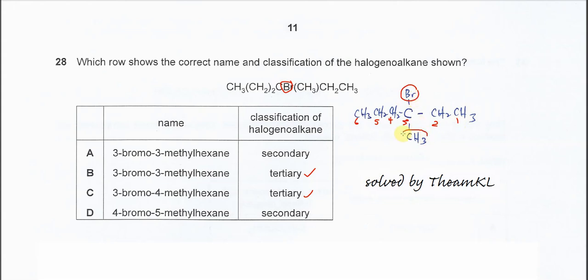At the same time, one methyl group is bonded to this third carbon as well. So therefore it's three-bromo-three-methyl. The longest chain is six carbons, so it's hexane, and it's a tertiary halogenoalkane, so the answer is confirmed as B.